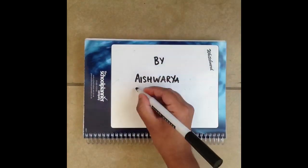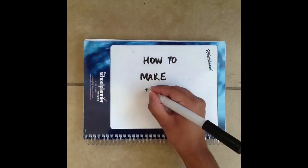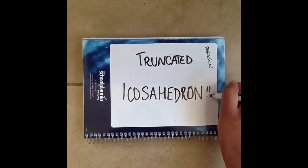Archimedean solids by Aishwarya, Angela and Katie. This is our video on how to make the truncated icosahedron.